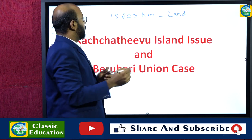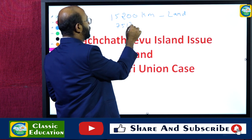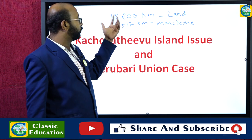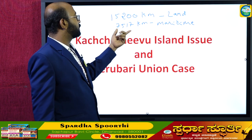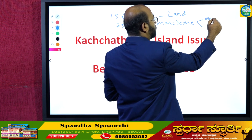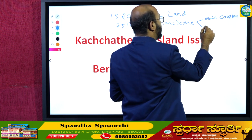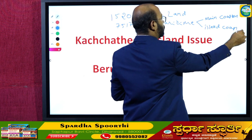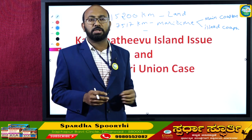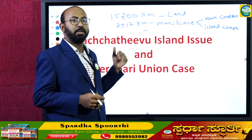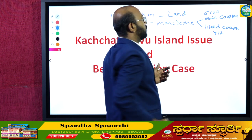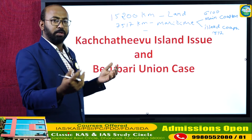India has around 7,517 kilometers of maritime boundary. This maritime boundary can be divided into the mainland coast and the island coast. About 6,100 kilometers belong to the main coastline, while the island coastline constitutes around 1,517 kilometers. This is a brief introduction to the Indian border.